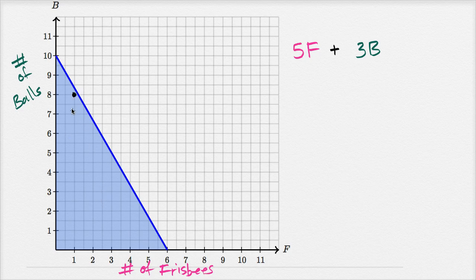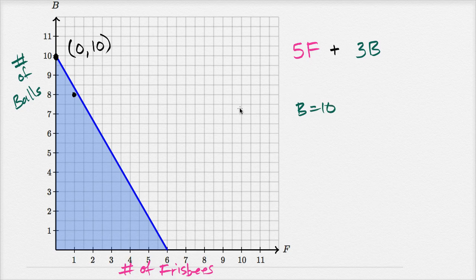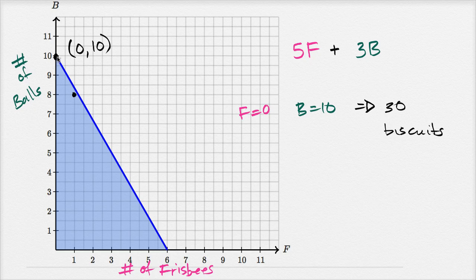She's hitting a maximum when she's on the line. An easy point is where f equals zero and b equals 10 — zero frisbees and 10 balls pretty much maximizes her biscuits. How many biscuits does she get? That's zero plus three times ten, which is 30 biscuits. So this point corresponds to 30 biscuits, and any point along this blue line also corresponds to 30 biscuits.